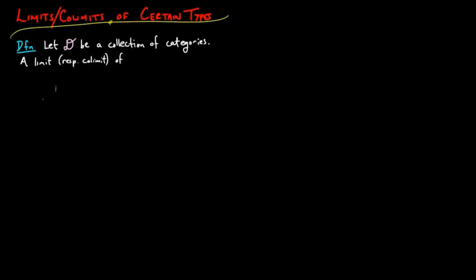A limit, respectively co-limit, of type D in a category A is a limit, respectively co-limit, of a diagram from I to A such that I is a category in D.